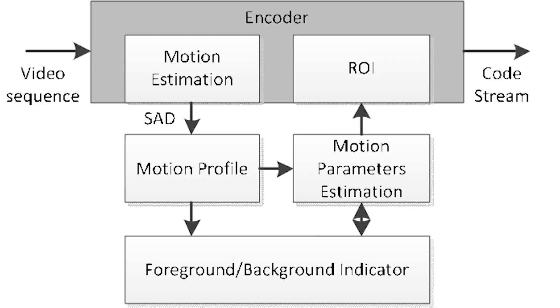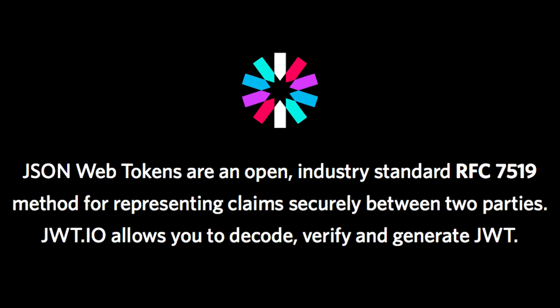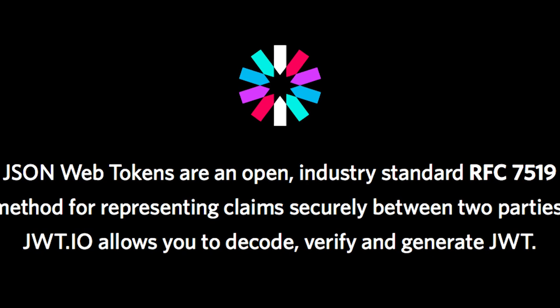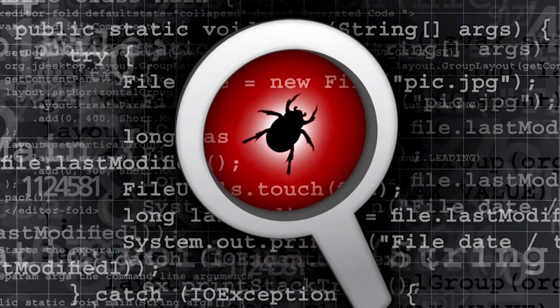Now let's talk about tracking the code flow. List down the entry points where functions or methods would interact with user-controlled data. For example, if you are reviewing a JWT library, the full token will be user-controlled. Follow the flow without focusing on finding bugs yet. The goal is understanding what is happening — it's all about observation here.